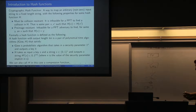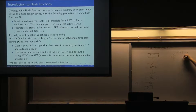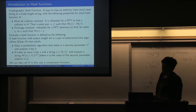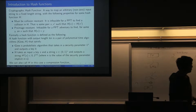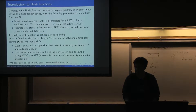Pre-image resistance is almost the exact same thing — just switching around the variables and stating it differently. It says that if you already have a y, if you already know the hash, it's hard to find x such that H(x) = y. So given y, it is hard to find the x that maps to it — that is pre-image resistant. Then there is also second pre-image resistance, which is essentially the inverse: given x, find a different input that maps to the same hash.